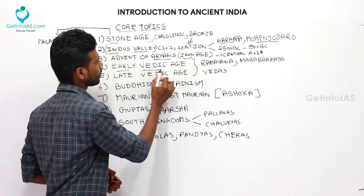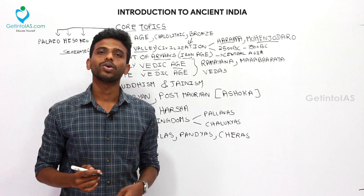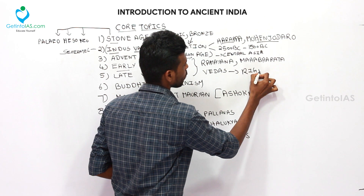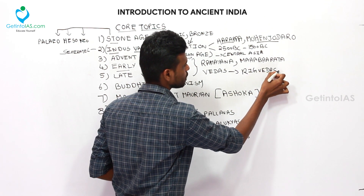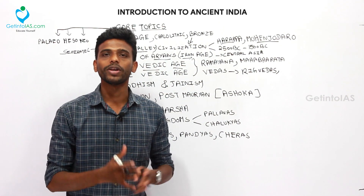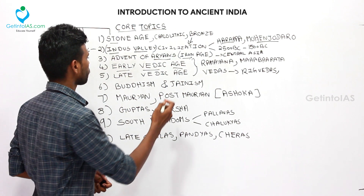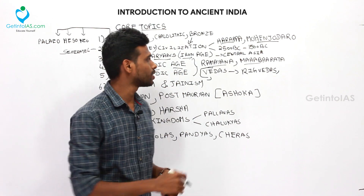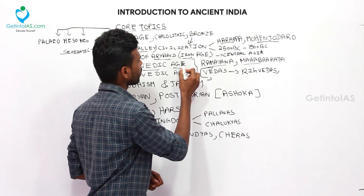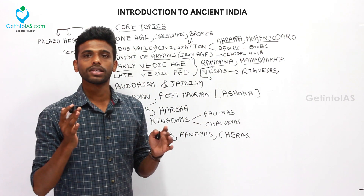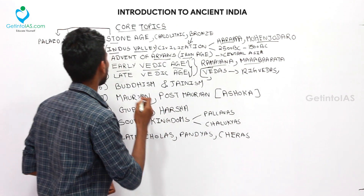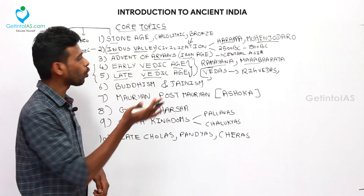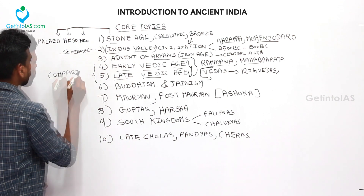During the arrival of Aryans, that age is also termed as the Early Vedic Age because the people started to write Vedas. One important Veda composed during the Early Vedic Age was the Rig Veda. Vedas are philosophical and religious texts giving instructions on how to live and administer kingdoms. The two epics Ramayana and Mahabharata were also composed during this period. For Early Vedic and Late Vedic periods, compare and study the features and progress during each, and you will easily learn it.